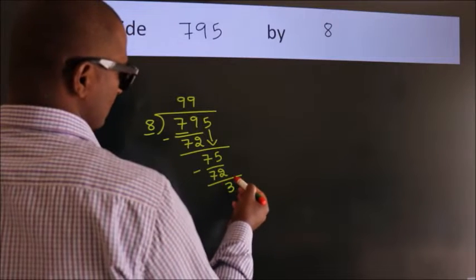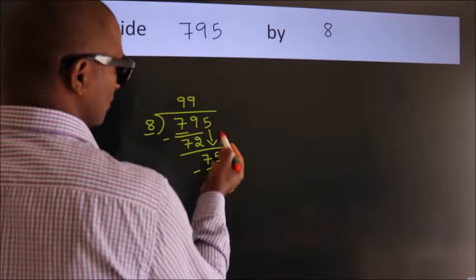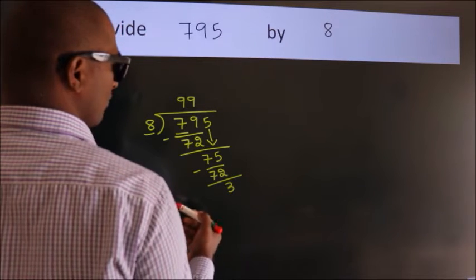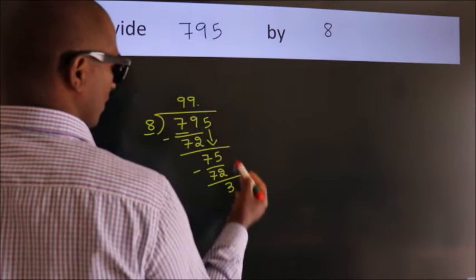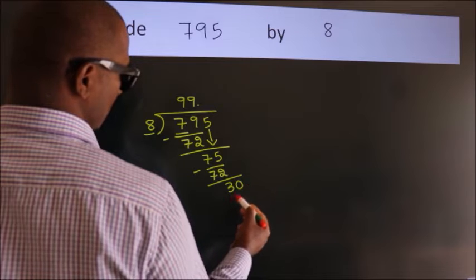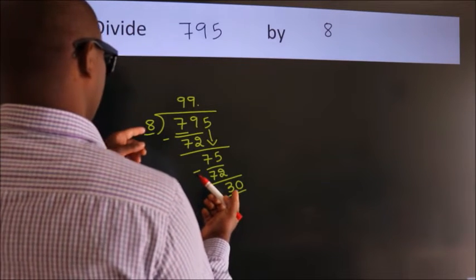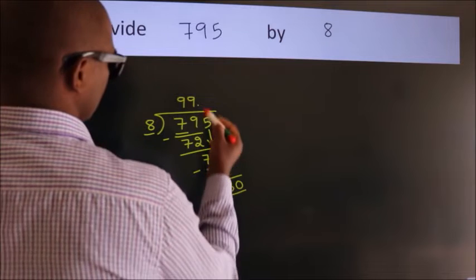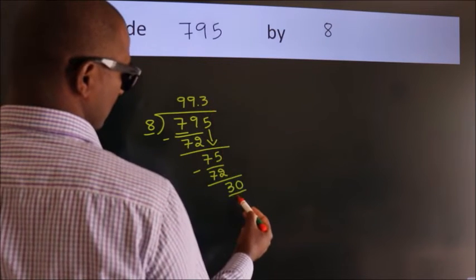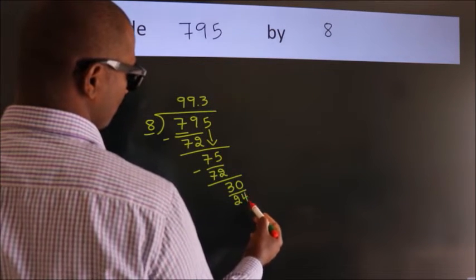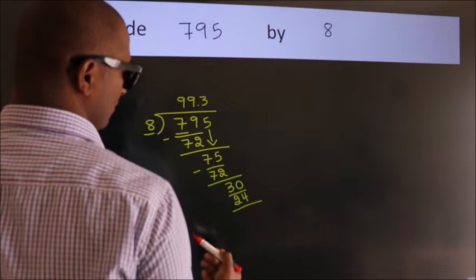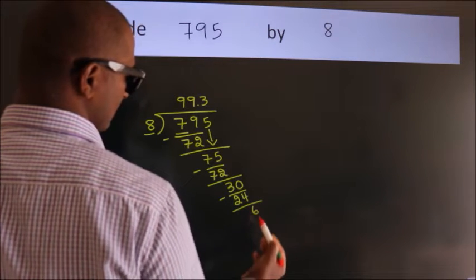After this, no more numbers to bring it down. So what we do is, we put dot, take 0. So 30. A number close to 30 in 8 table is 8 threes, 24. Now we subtract. We get 6.